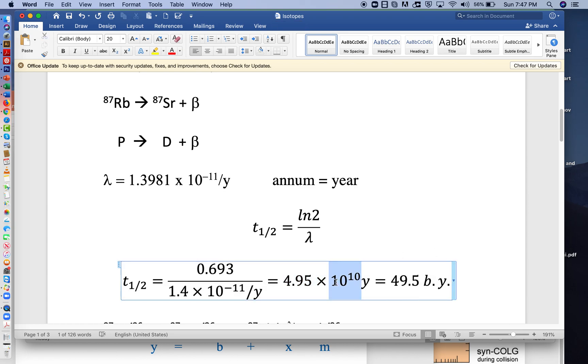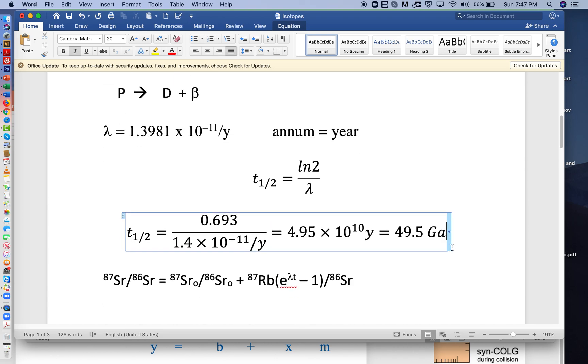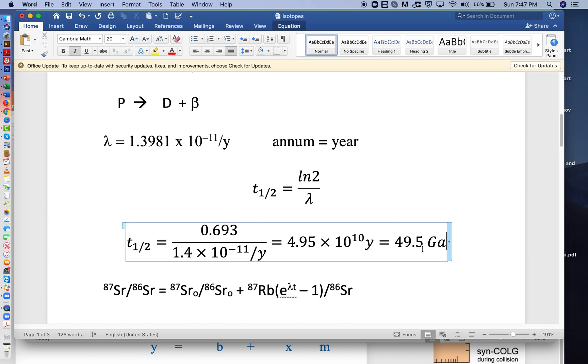We usually don't want to deal with very large numbers like this, so we use billions of years, such as Ga, or millions of years, megaannums. That's the half-life—very long.